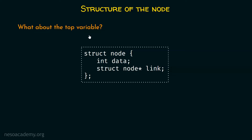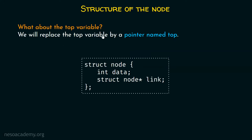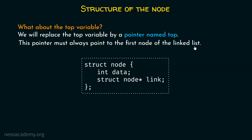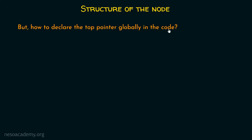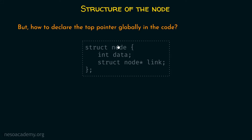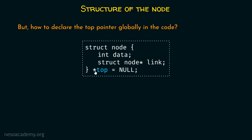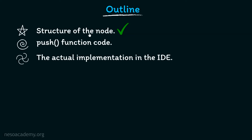We need a pointer that must always point to the first node of the linked list. We will replace the top variable with a pointer named top. To declare the top pointer globally, we write: struct node star top equal to null. This top pointer must point to the first node of the linked list, so its type must be struct node. This piece of code is declared at the top of the program and is global. It is initialized to null because currently the stack is empty.